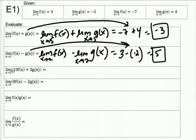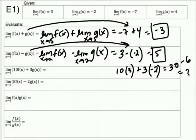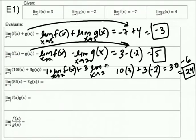Next, we have the limit as X approaches two of 10 times F of X plus 3 times G of X. If you're able to jump to realizing this is 10 times the F of X limit plus three times the G of X limit, giving you 30 minus 6, which is 24, that's great. If you need to write it out as 10 times the limit as X approaches two of F of X plus three times the limit as X approaches two of G of X, that's also fine.